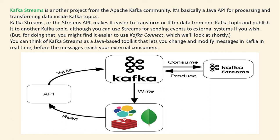Kafka Streams, or the Stream API, makes it easier to transform or filter data from Kafka topics and publish it to another Kafka topic. Although you can use streams for sending events to external systems if you wish, for doing that you might find it easier to use Kafka Connect, which we'll look at later. You can think of Kafka Streams as a Java-based toolkit that lets you change and modify a message in Kafka in real time before the message reaches your external consumer. In this diagram, Kafka Streams is used to write to and modify the Kafka topic — it is essentially API-driven processing.